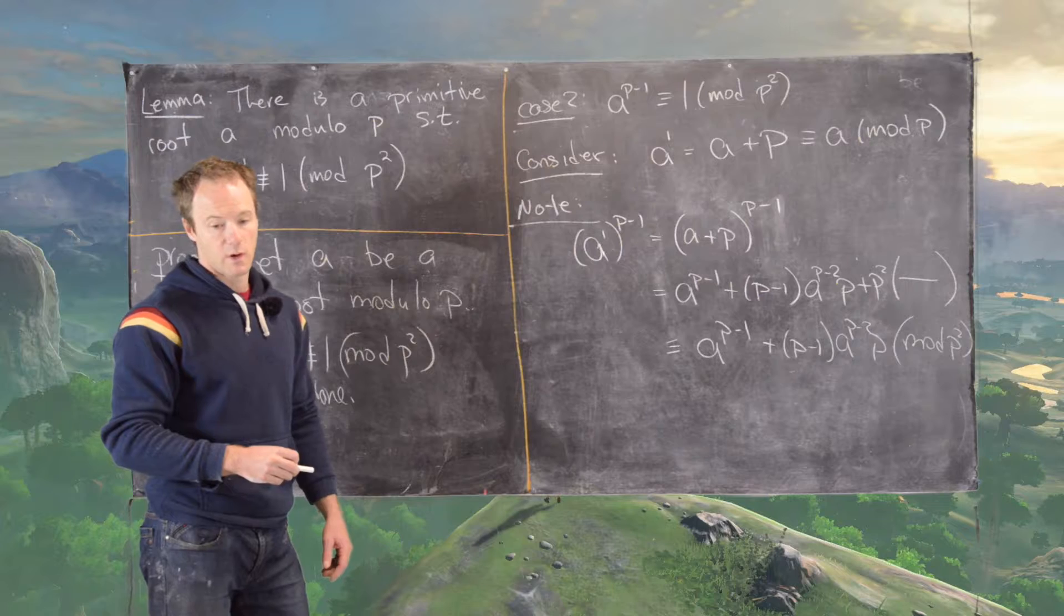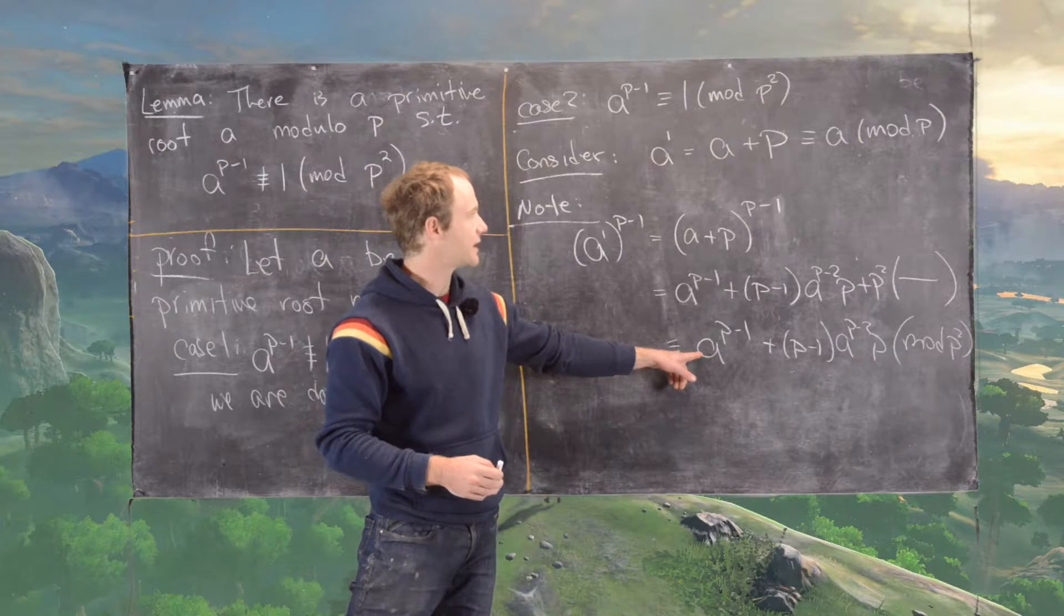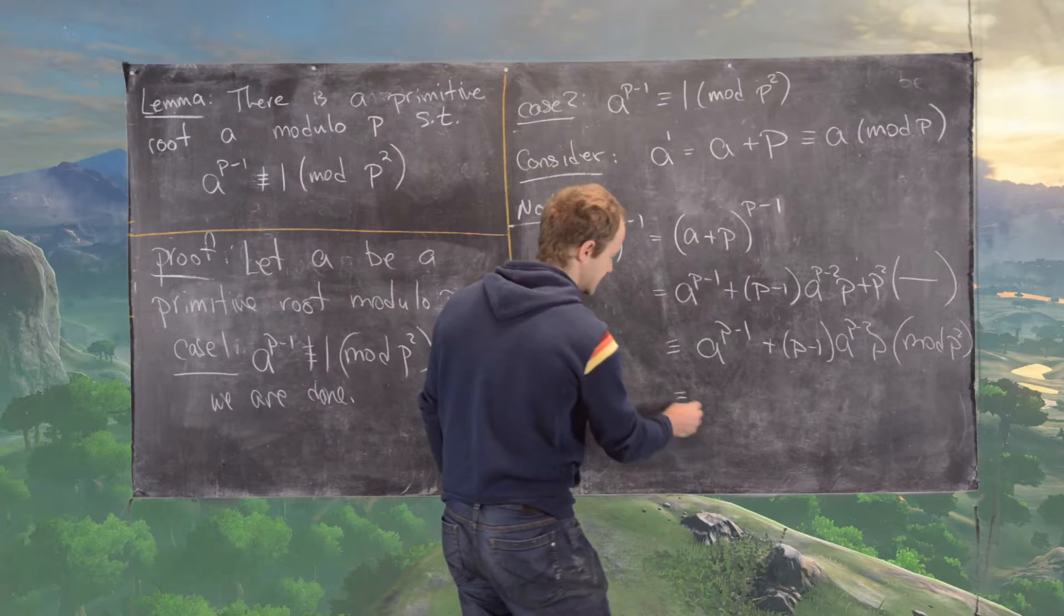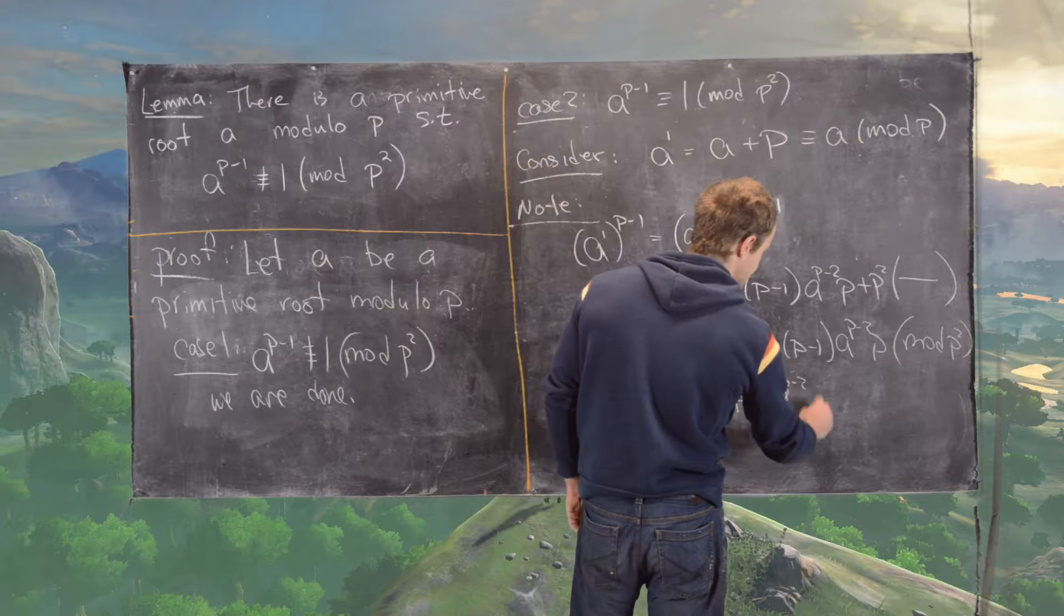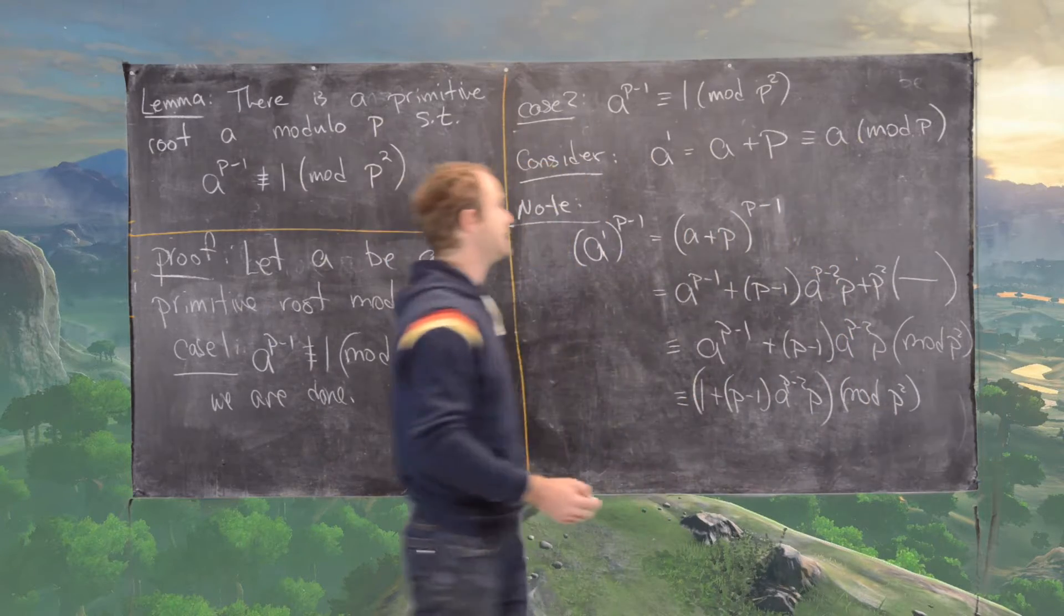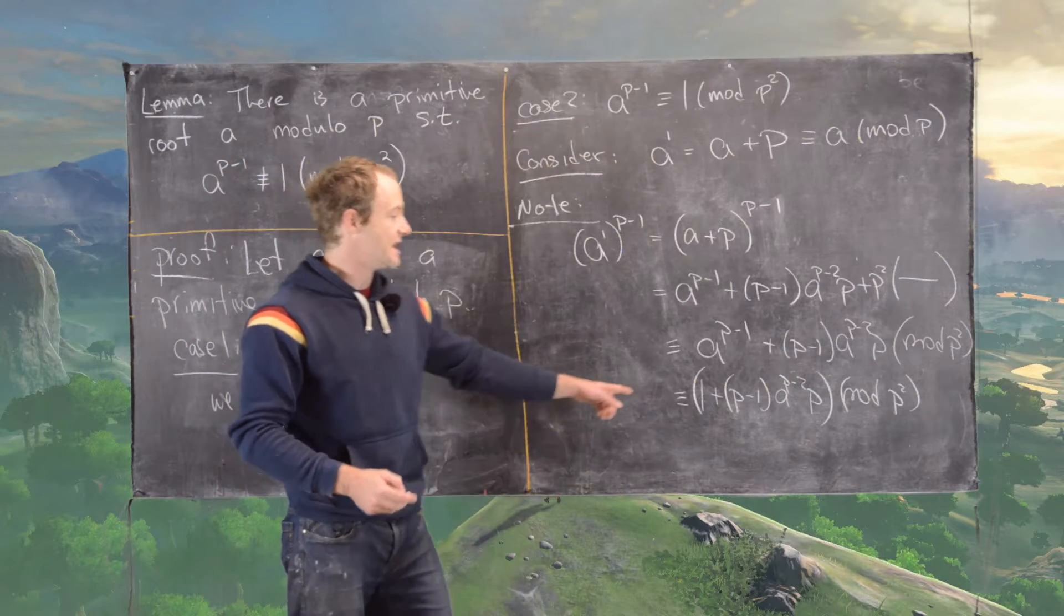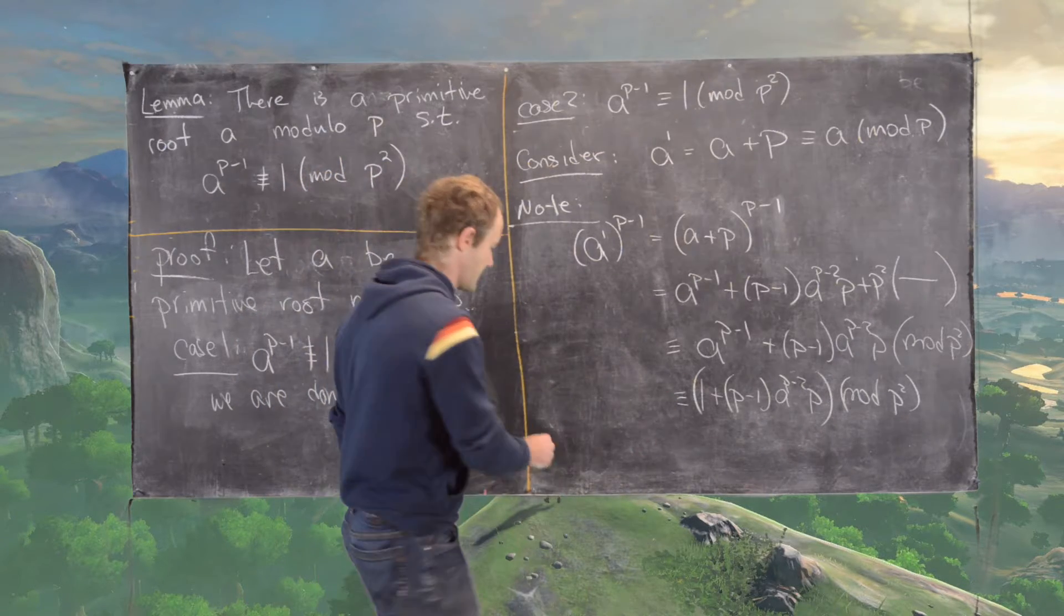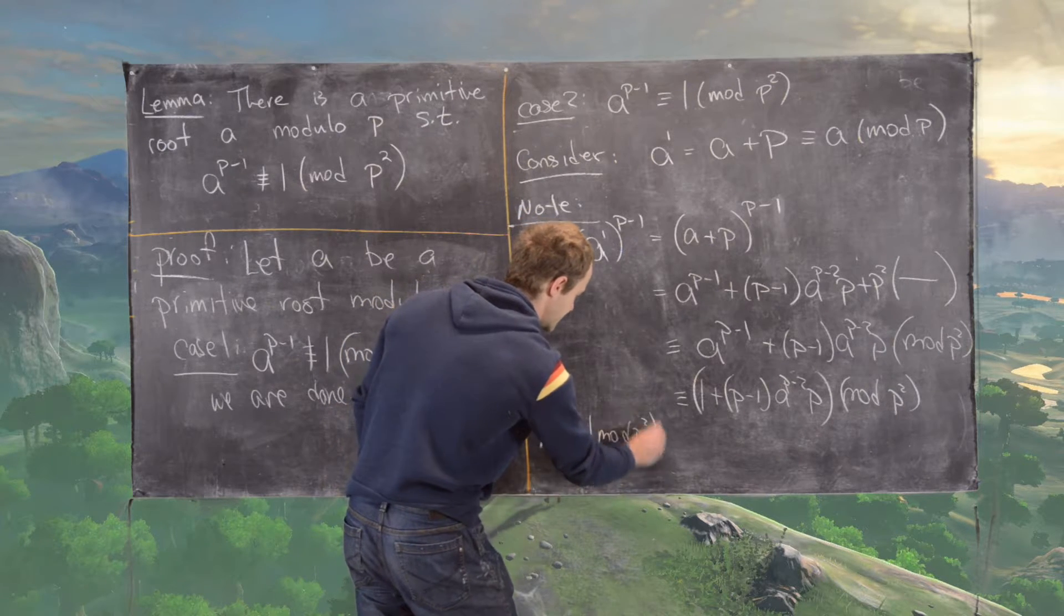So now what we'll notice is the following. This thing we started with was congruent to one mod p squared. So we can write this as one plus p minus one times a to the p minus two times p modulo p squared. And now the next thing to notice is that this is not congruent to one modulo p squared.